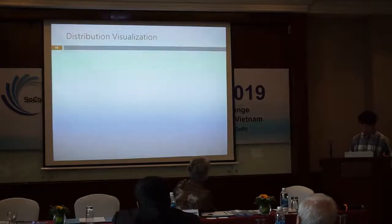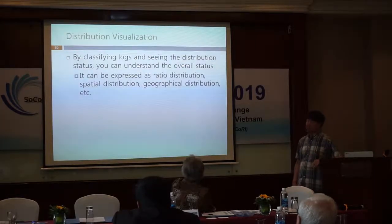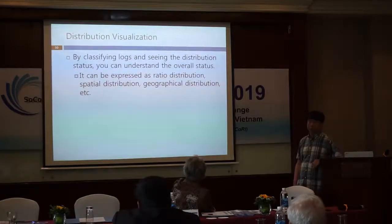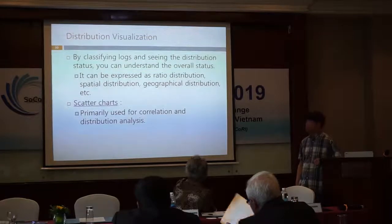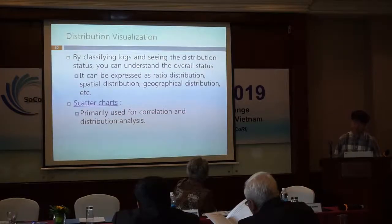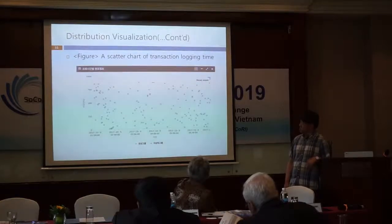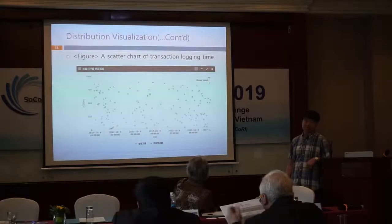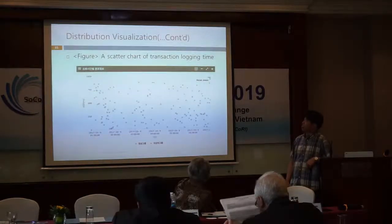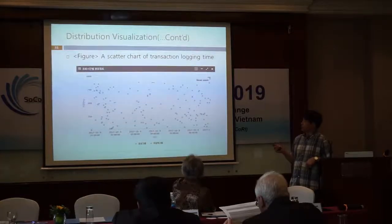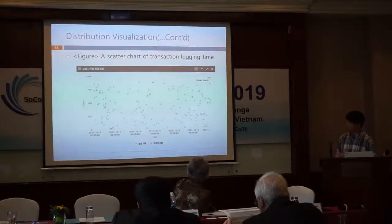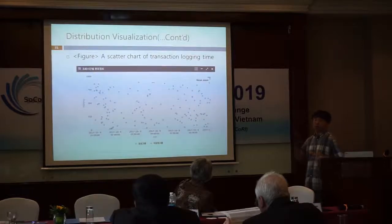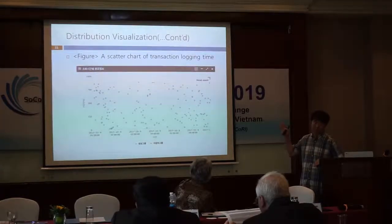Let's turn to distribution visualization type. Distribution status by classified groups provides an overview of the situation. In this case, a scatter chart showing data distribution or clustering trend helps you spot anomalies out of the normal area. This illustrates the scatter chart showing the status of transitions over time, making it possible to confirm the status of personal information leakage by checking whether personal information values fall outside normal ranges.